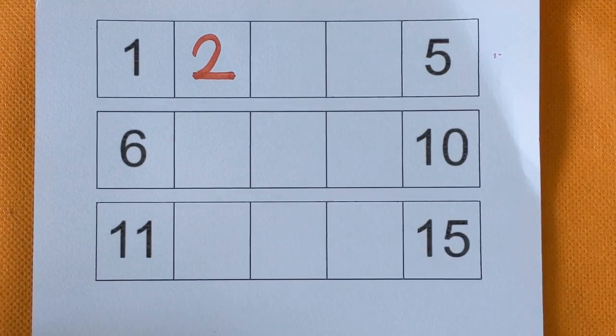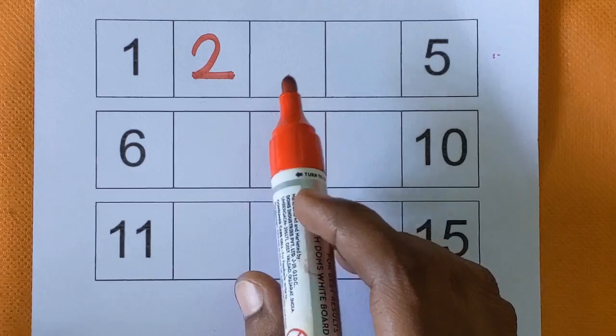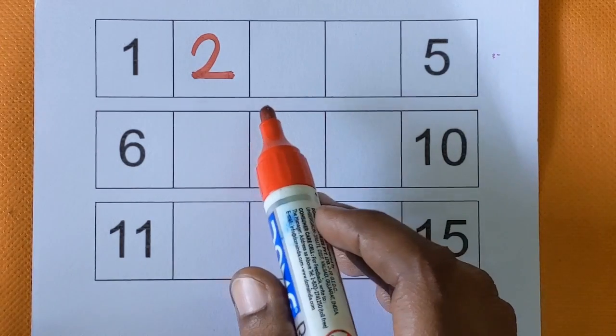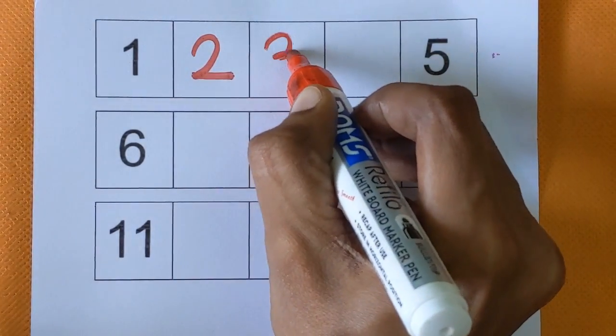After number 2, next number is, what comes after number 2? It's a number 3.